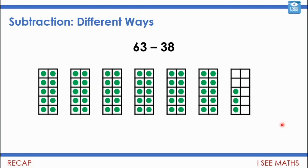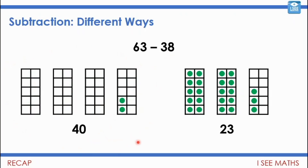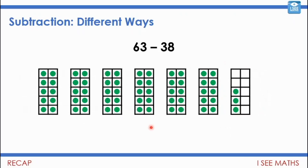Here is 63. One thing that can be done is to break that 63 down — split it into 40 and 23. Now 40 is the next 10 up from 38, and I can just take the 38 from this pile here. That leaves me with 2 more in this pile and the other 23 here, so in total I've got 25.